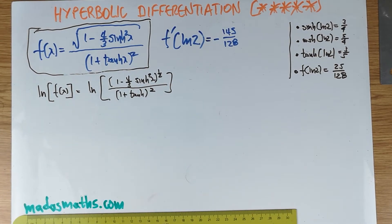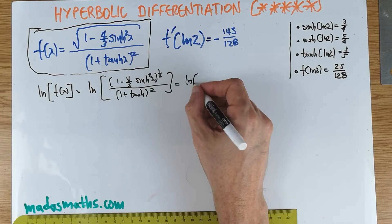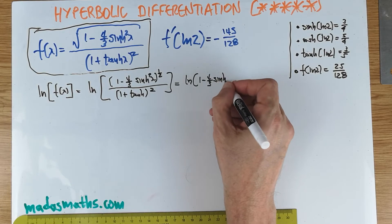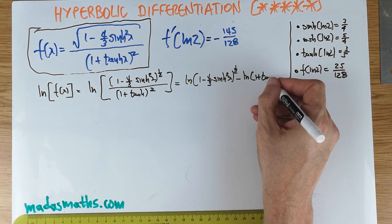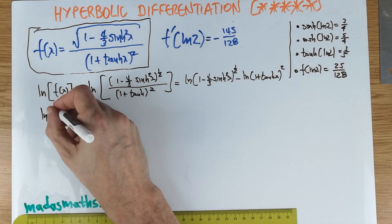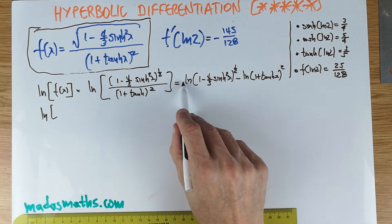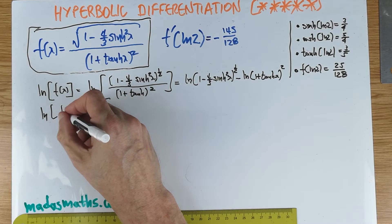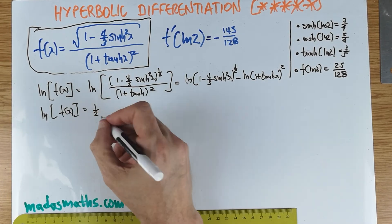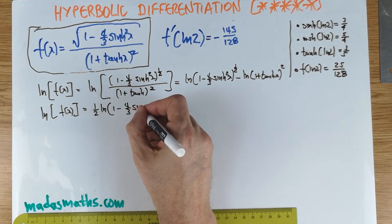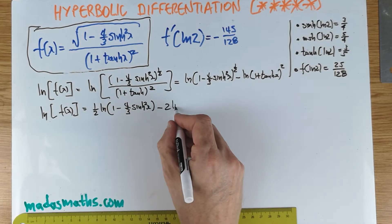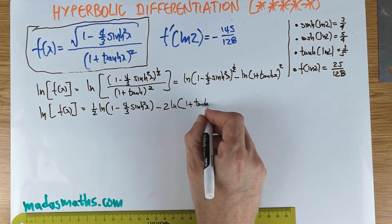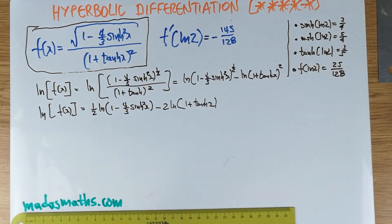Logarithmic differentiation has two key points: firstly, logs have rules; and secondly, simple logs are easy to differentiate. Using the log rules, that's going to be: the log of the numerator to the power of a half, minus the log of the denominator. The differentiation hasn't started yet — it's about to start. Using the power rule to bring powers to the front: it's going to be (1/2)·log(1 − 4/3 sinh²x) minus 2·log(1 + tanh x).